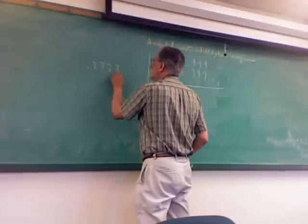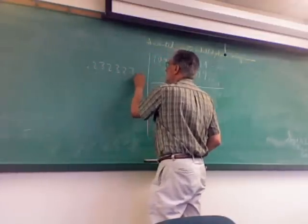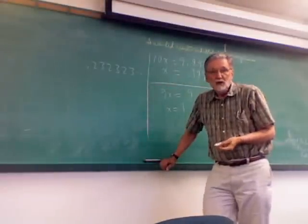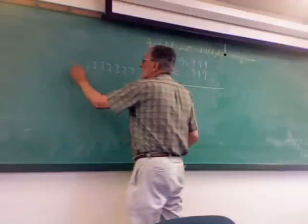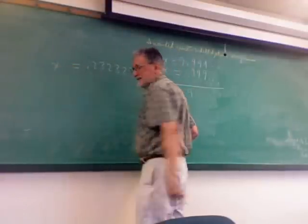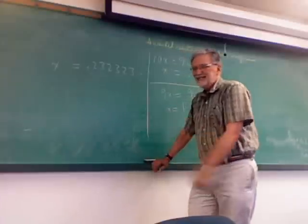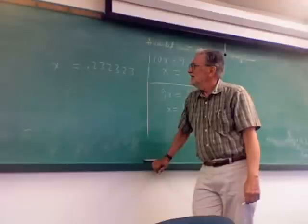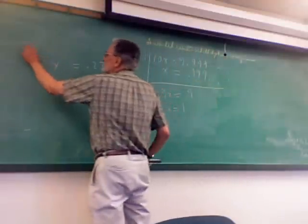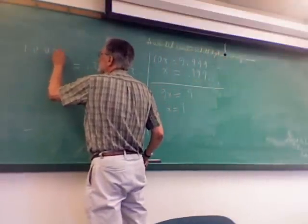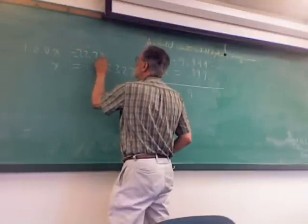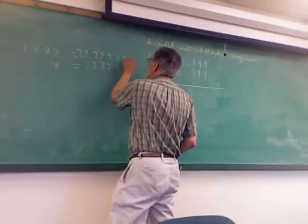0.23, 23, 23, etc. Okay, we don't know what it is, so let's call it X. Now, last time I multiplied both sides by 10. That isn't going to work this time. I want to multiply both sides by 100, and I'm going to get 23.232323.